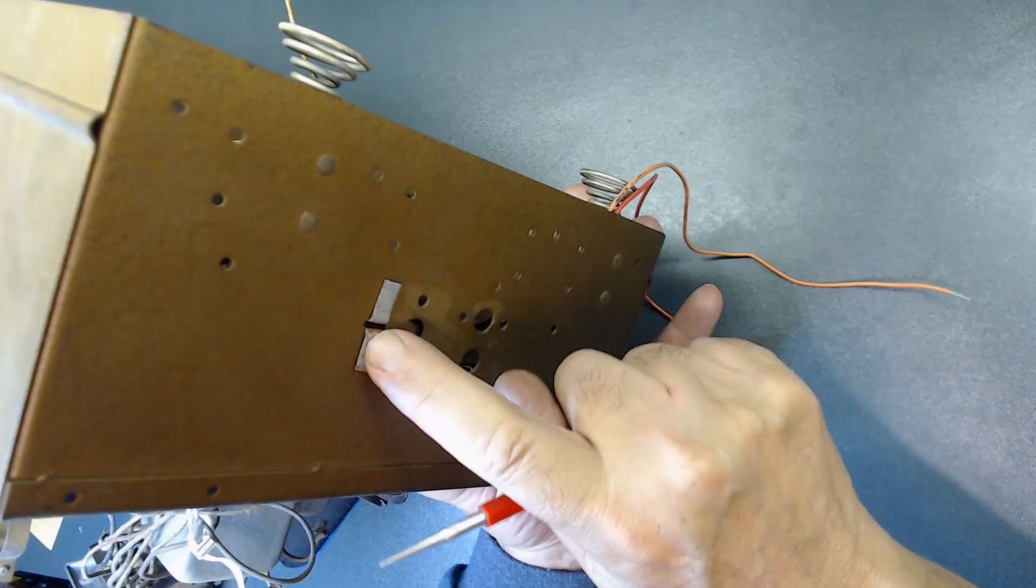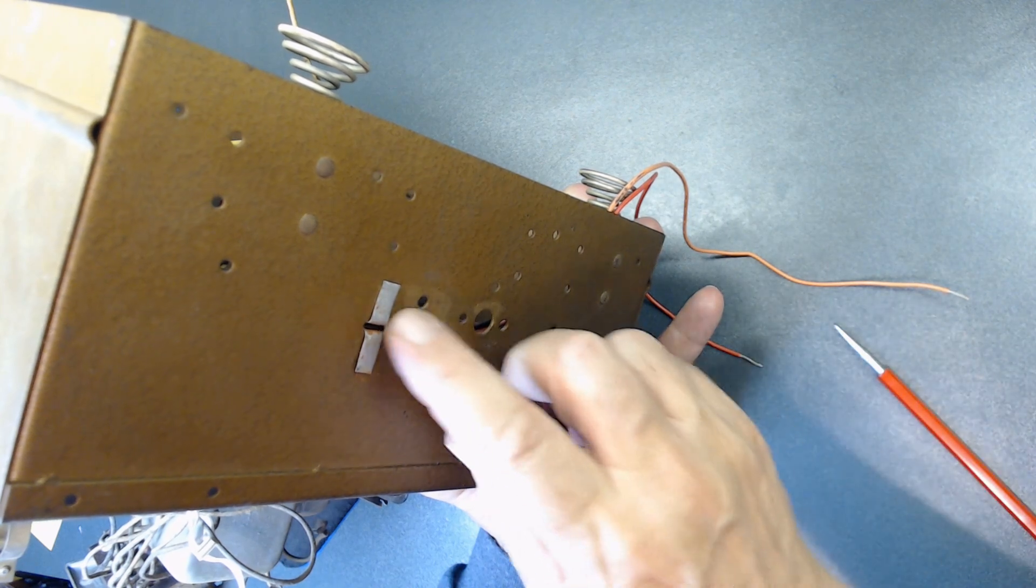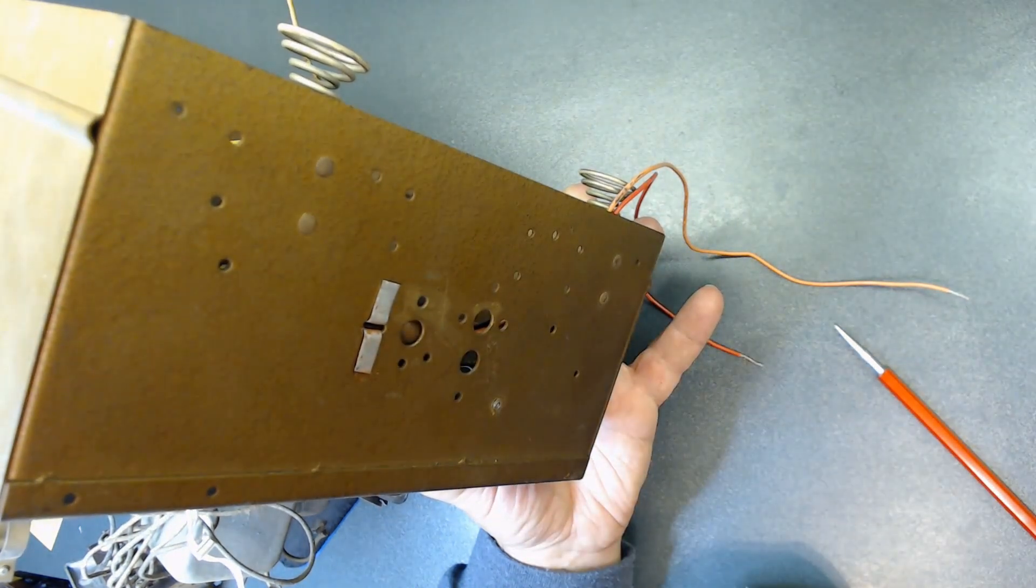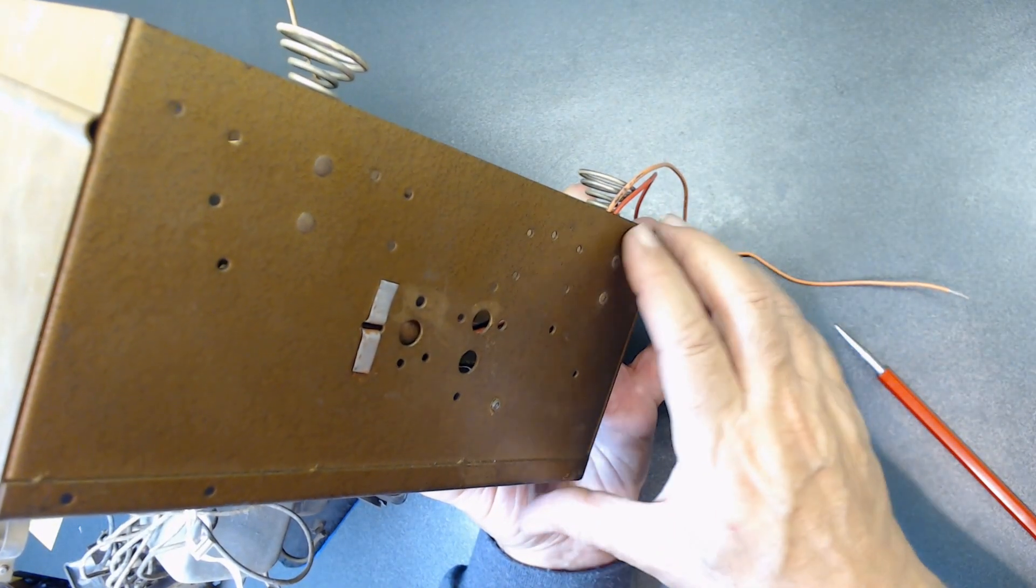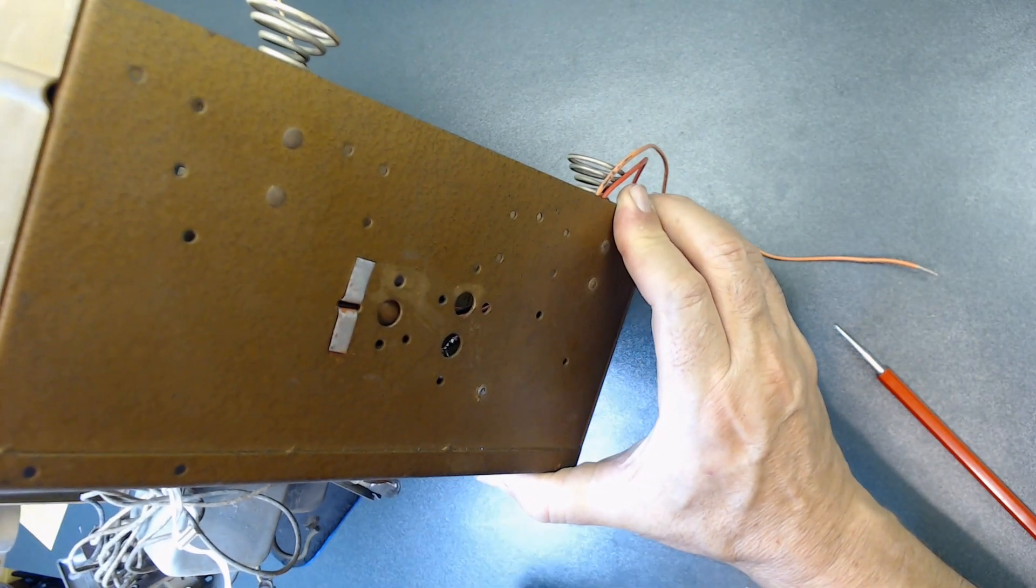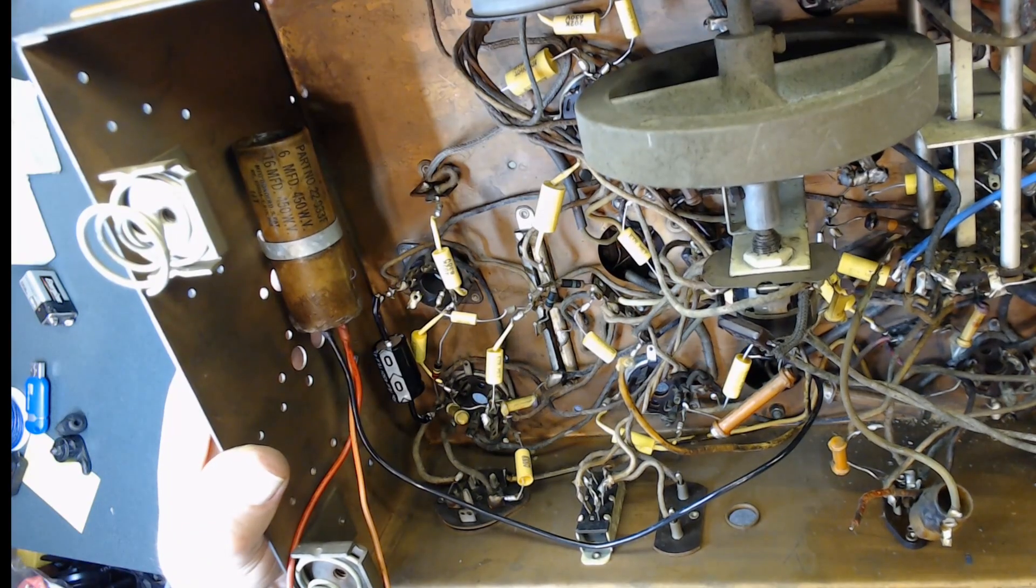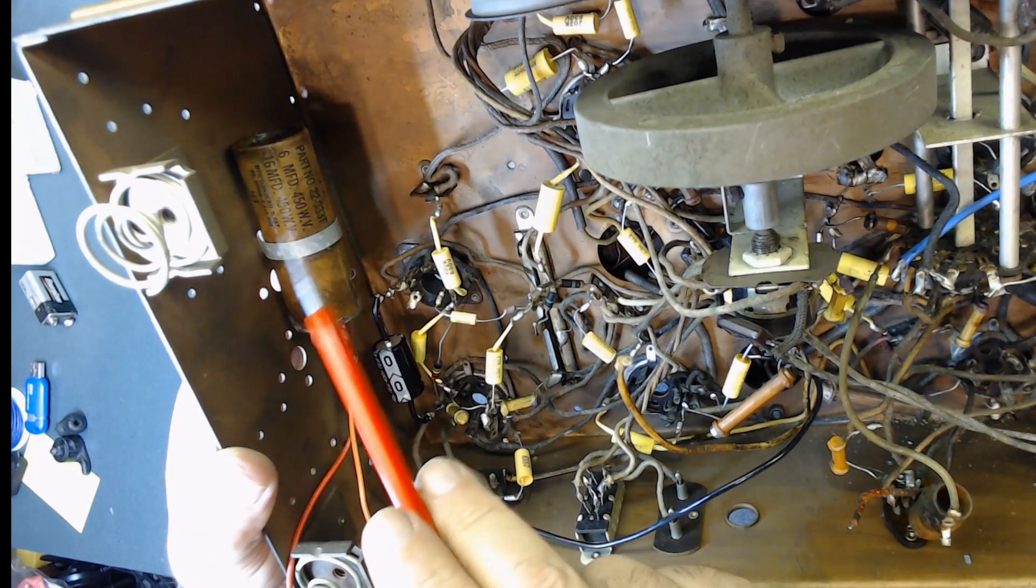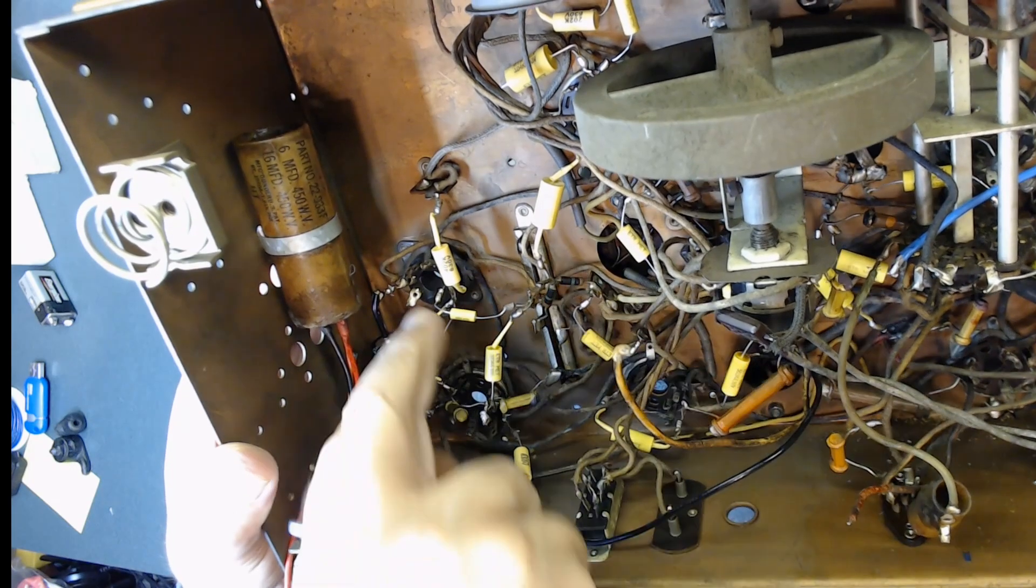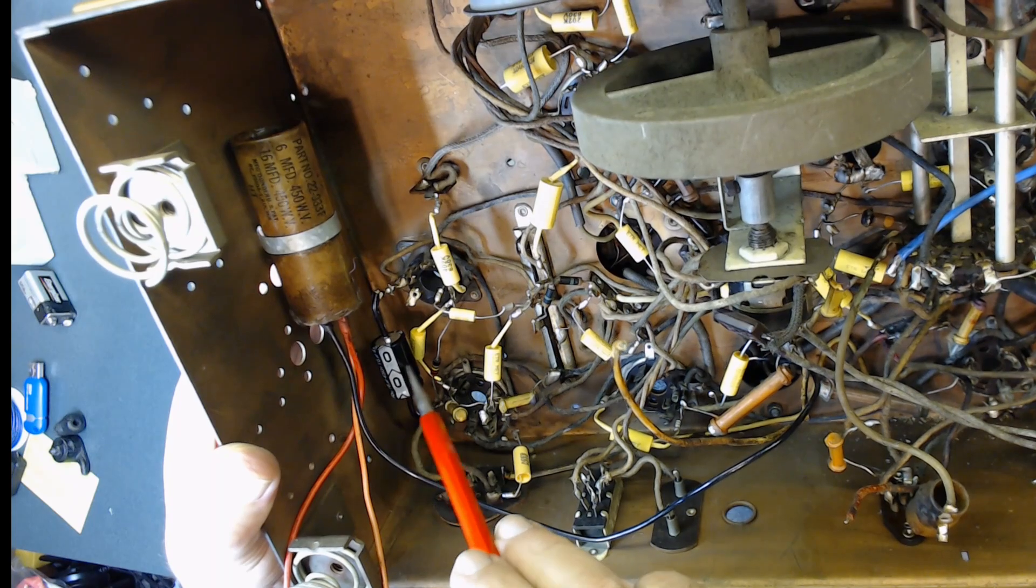You see how I bent it. It's very secure, it's not going to come out, and it's going to be much easier to remove it next time. Hopefully there won't be a next time, but it's at least going to be much simpler. Let me show you the other side. This is inside. See how I installed the capacitor, it's pretty secure. I installed the other capacitor as well.